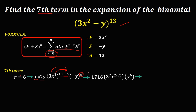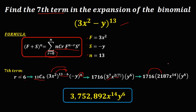Simplify: 3 to the power of 7 is 2,187, and 2 times 7 gives 14, so x to the power of 14, times y to the power of 6. The answer is 3,752,892 x to the power of 14, y to the power of 6, which is the seventh term of this binomial equation.